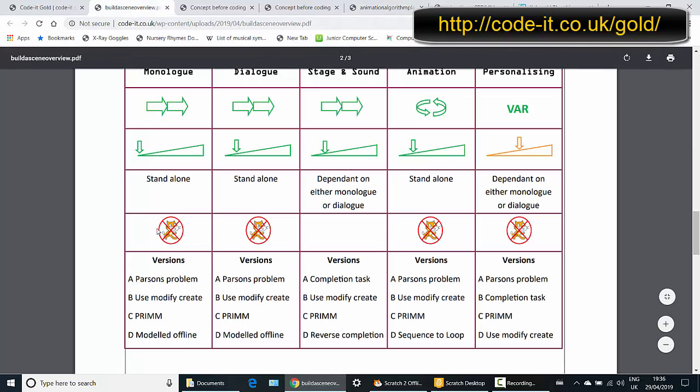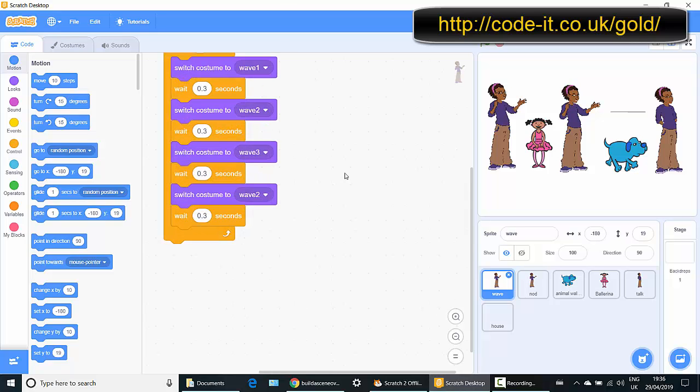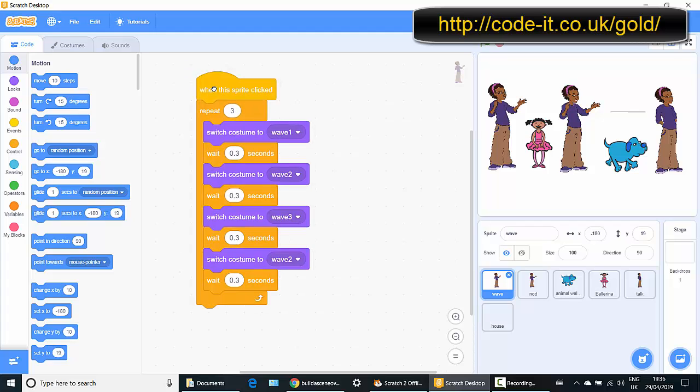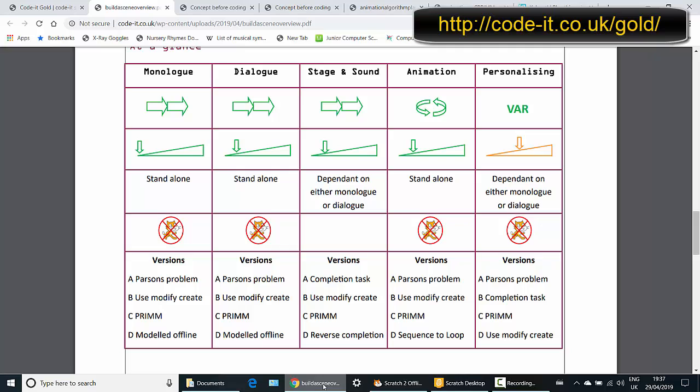A very popular one is the use, modify and create. So this is where we give children a piece of planning like this in here, and it's already been built. They have to run the code, see what it does. In this case, doing a bit of a wave. So that's the use bit. And then the idea is to modify that, to think about what you could change and how would that change it. What would happen if I change these number of repeats to five? What would be the outcome of that? What would happen if I took some of these blocks out and ran it with smaller amounts? So it's all about modifying the project before you go and write and think about planning your own. That's the use modify, which is a really nice method.